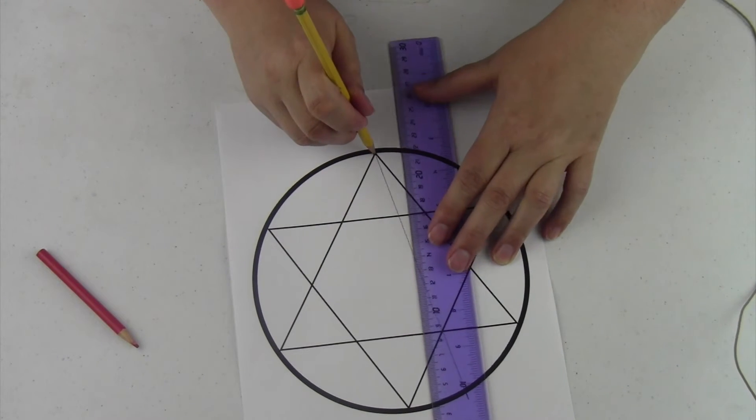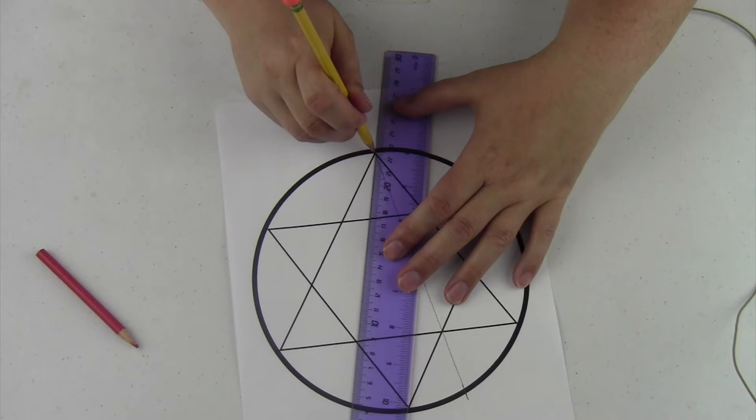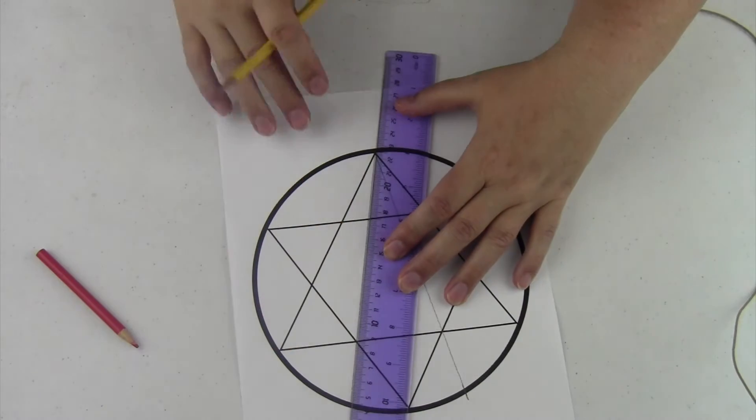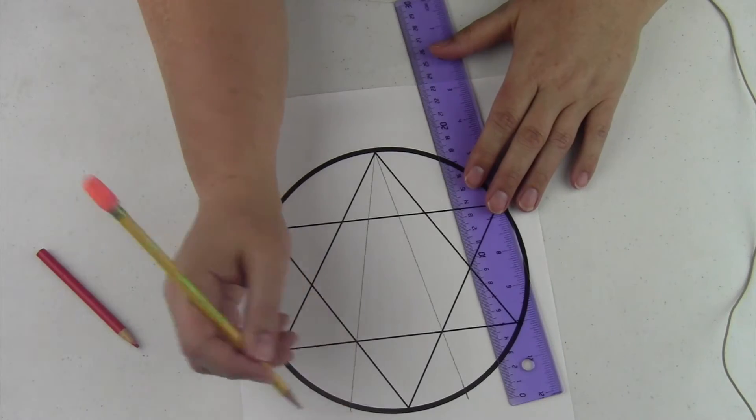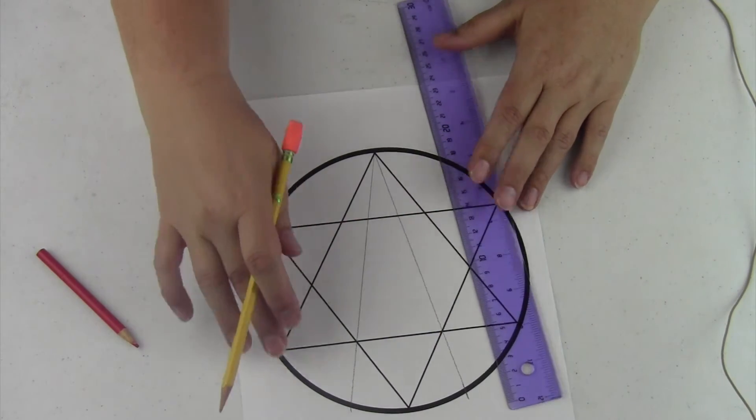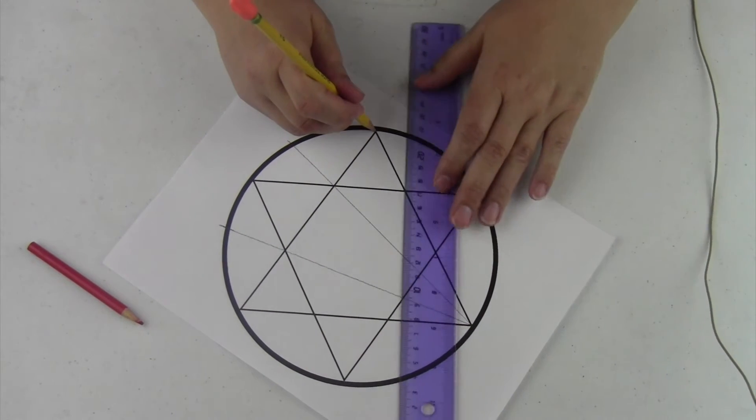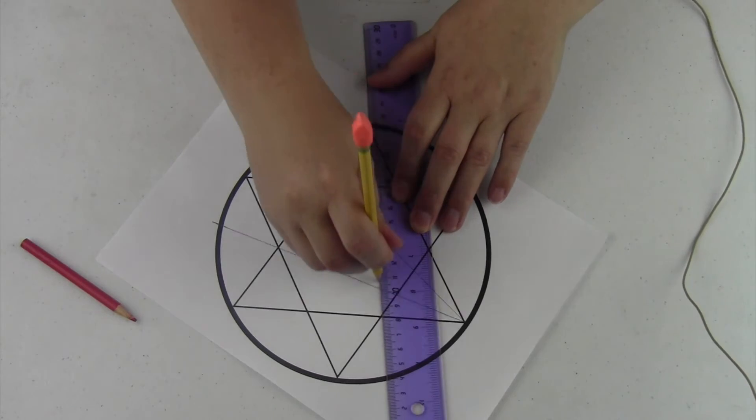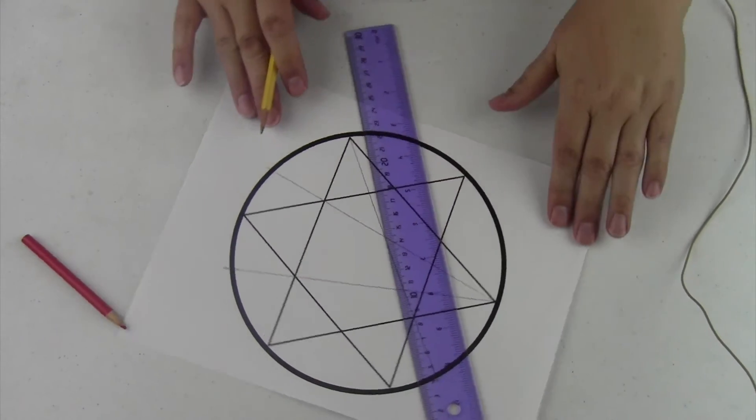The second one came from the same point going through the other point at the bottom of the triangle. Now we're going to take the same idea and go on the other side. Turn the paper and do the other side of that same triangle, creating a line all the way through to the outside so you can see that.